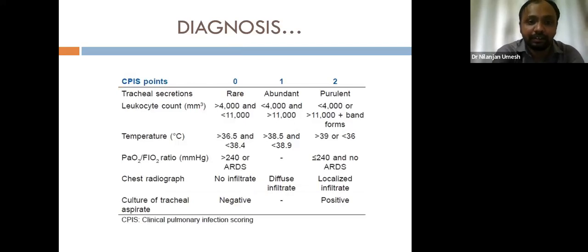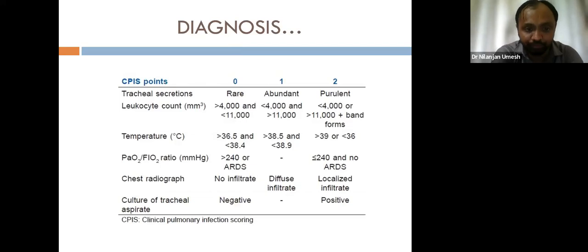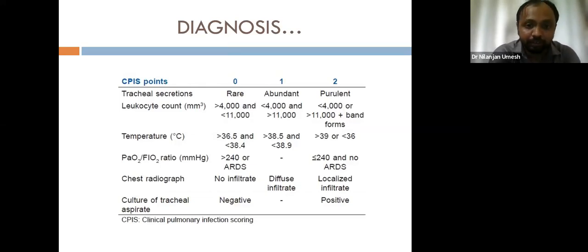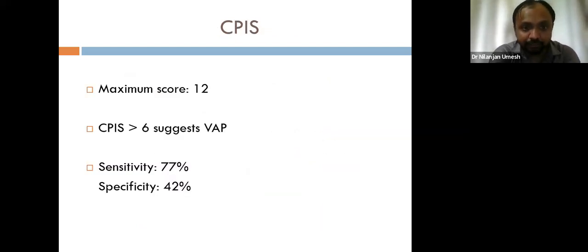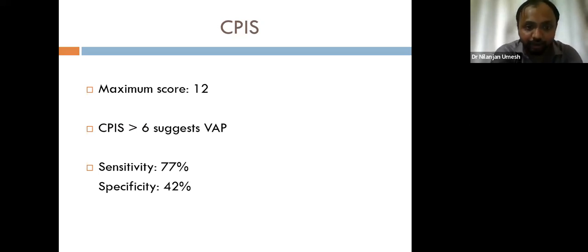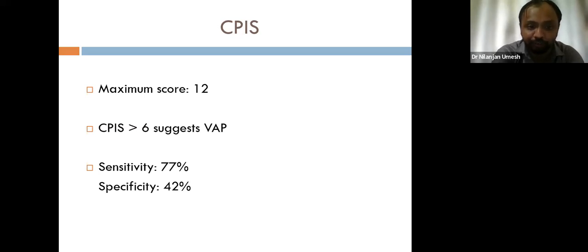The CPIS criteria uses six parameters: tracheal secretions, leukocyte count, temperature, PaO2/FiO2 ratio, chest X-ray, and culture of the tracheal aspirate. Points are assigned — maximum score is 12. A CPIS score greater than 6 suggests VAP. However, the CPIS has limitations: sensitivity of only 77 percent and specificity of only 42 percent.